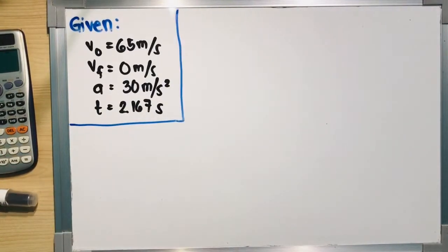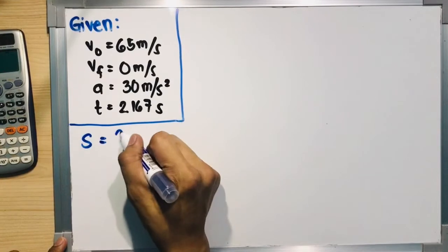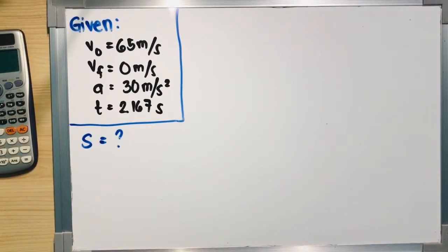The problem, as an additional item, is given the problem previously, what is the distance that the car traveled to make a full stop? First we solved the time, now what is being asked is the distance. So distance is being asked, and based on the formulas, what formula will we use to solve the distance?